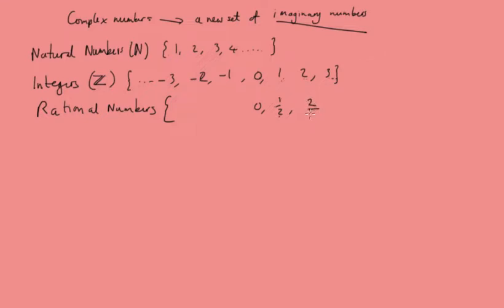Rational numbers include fractions like 2 over 3, and so on, all the fractions in between, and we get their negative equivalents — so we'd have minus 3 over 2, minus 2, and so on. Rational numbers are denoted Q.